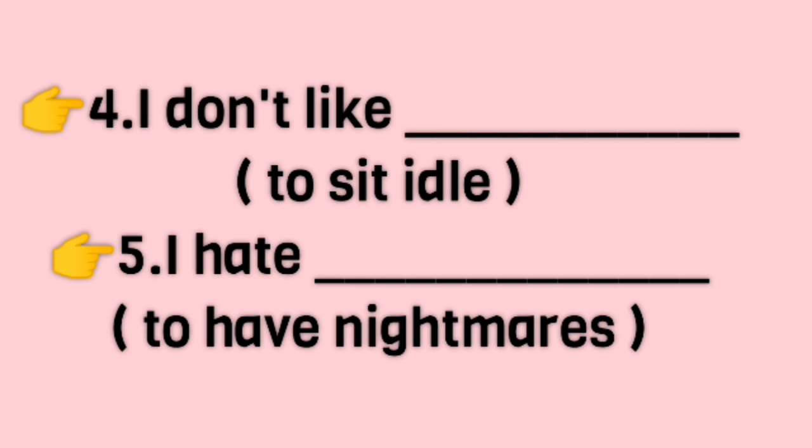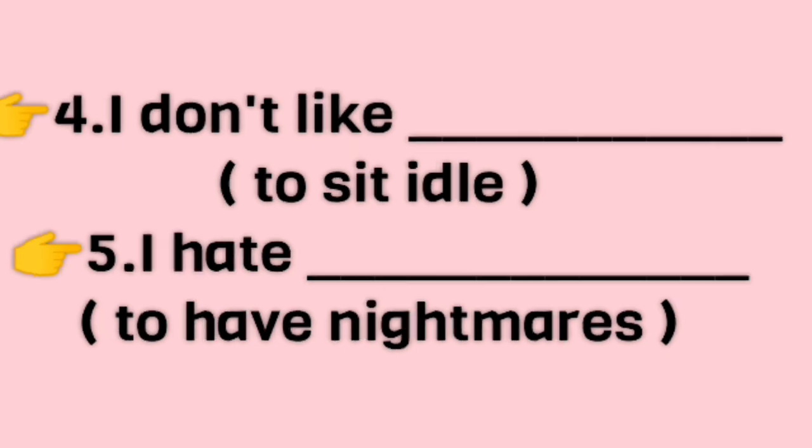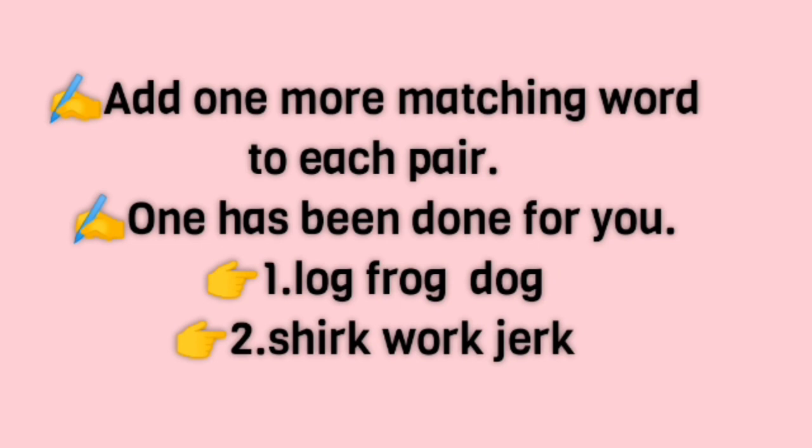Next exercise: say aloud and add one more matching word to each pair — one has been done for you. First pair: log, frog, dog. Second pair: shark, work, jerk — jerk means a short sudden movement.